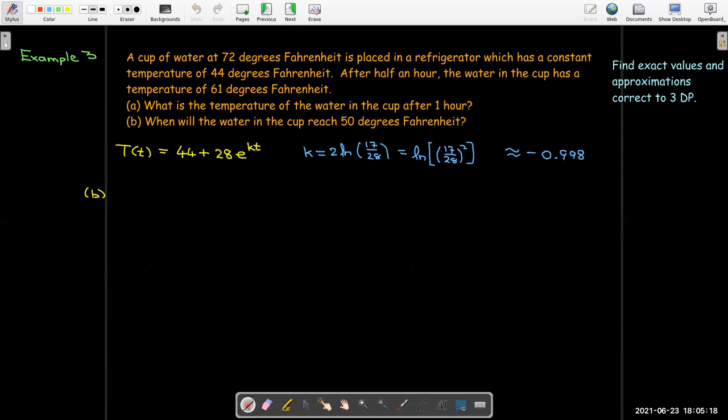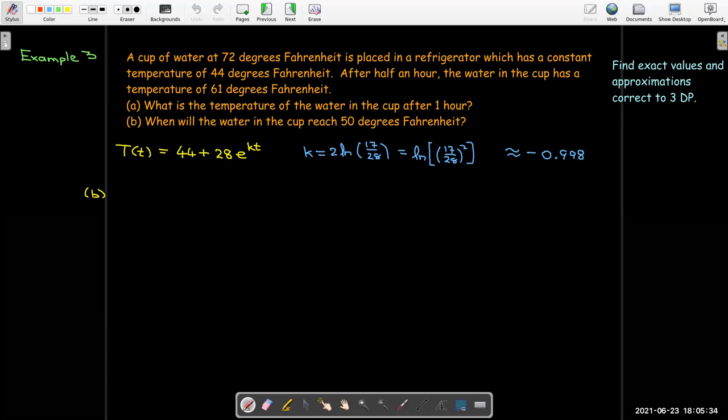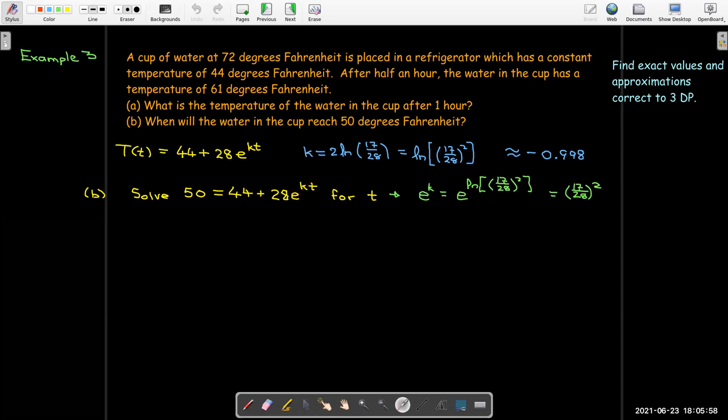What about part b? So we want to know when will the temperature in the cup reach 50 degrees? So after an hour, it was 54.3. And now when will it reach, how much more time will it take before we get to 50 degrees? Well, I'd like to solve this equation then for t. And we have the exact value for k. So in this expression, I see I have e to the power of k. And we saw that e to the power of k is e to the natural log of the fraction 17 over 28 squared. But since the natural log and the exponential are inverses of each other, that's just 17 over 28 squared.